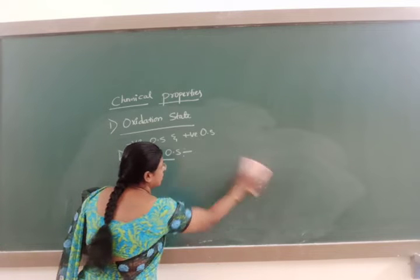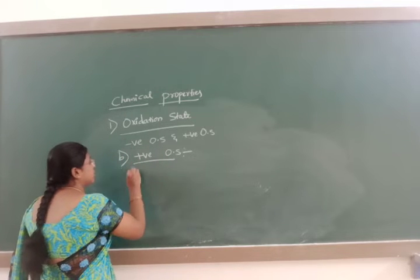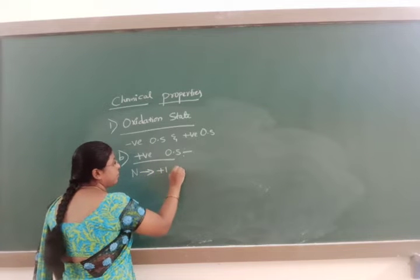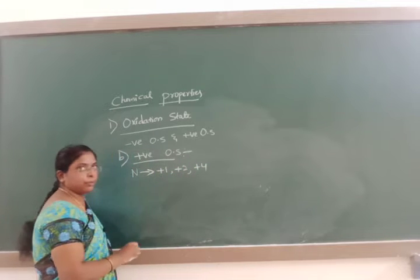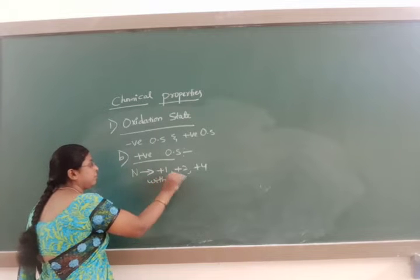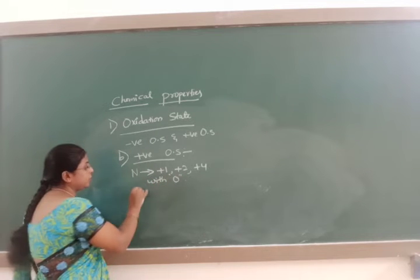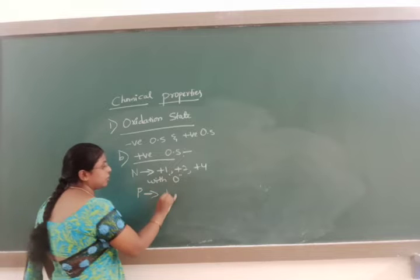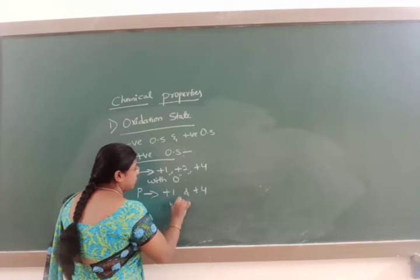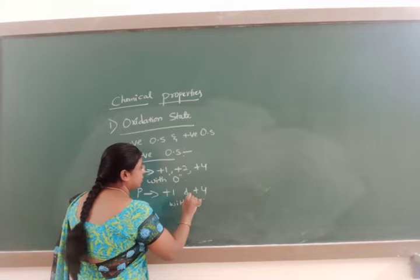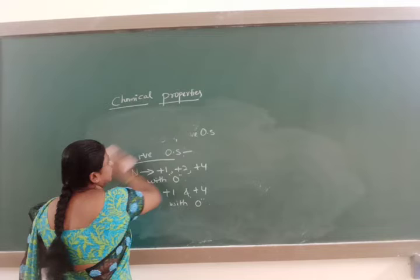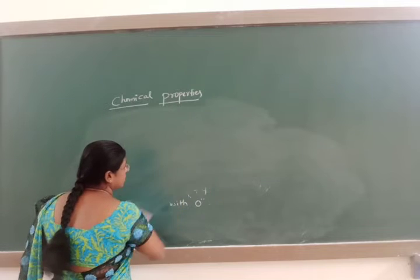Nitrogen exhibits oxidation states of plus 1, plus 2, and plus 4 with oxygen. Whereas phosphorus exhibits oxidation states of plus 1 and plus 4 with oxygen. This is about the oxidation state, the first chemical property.